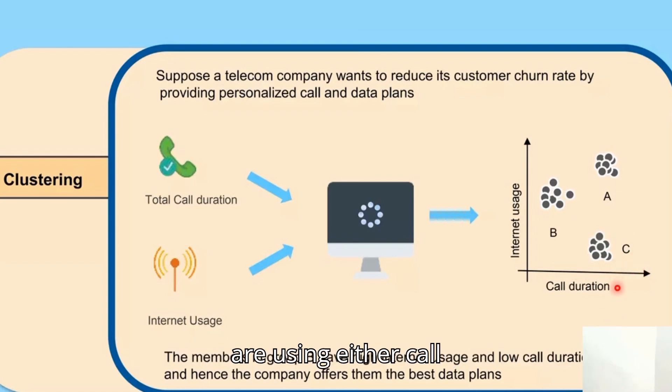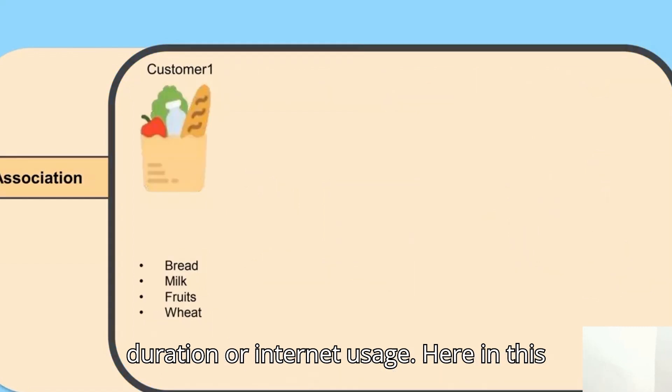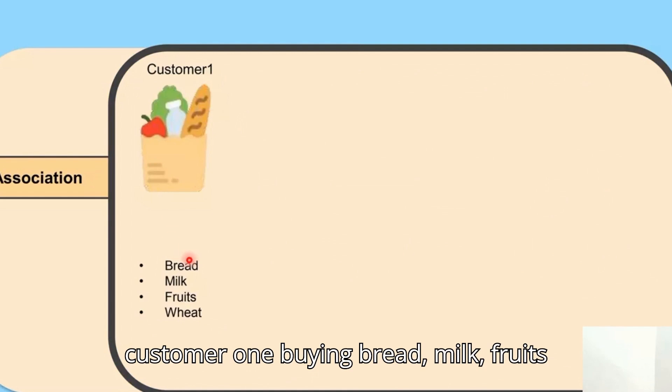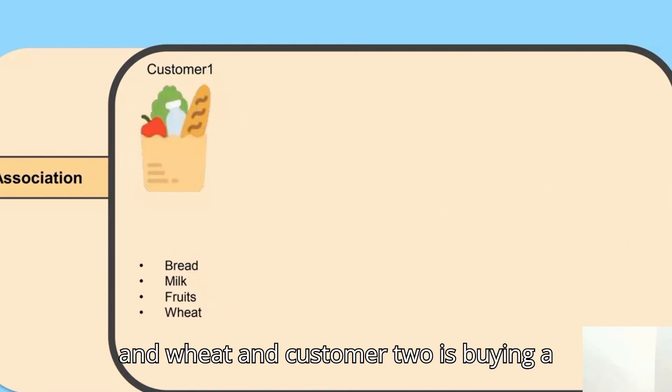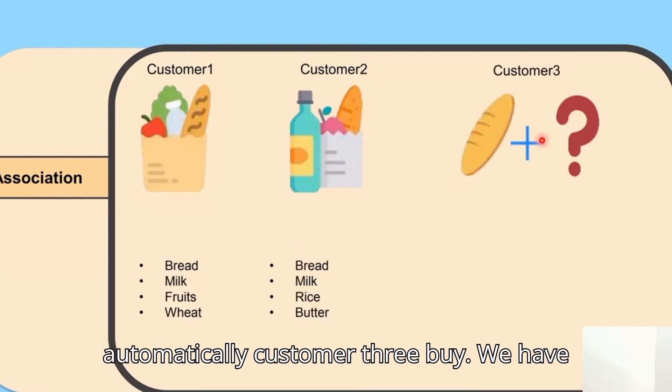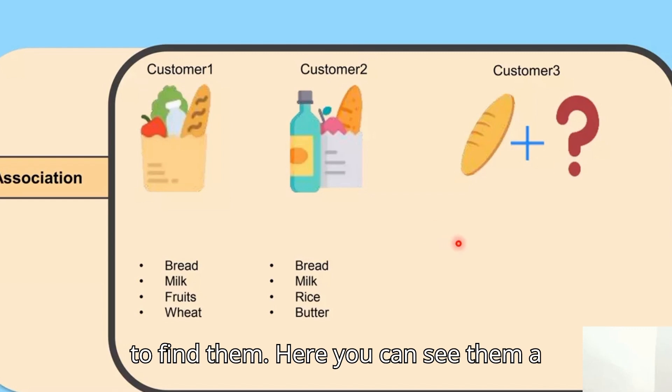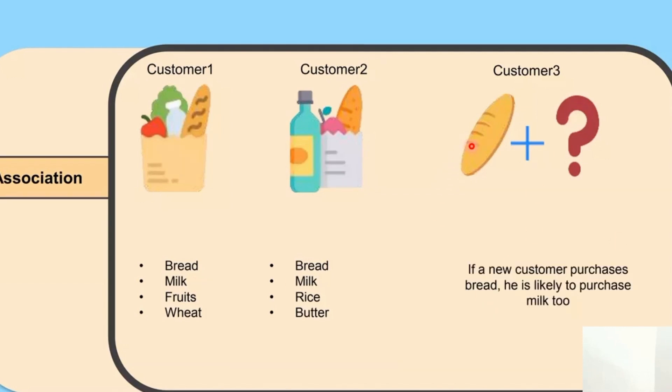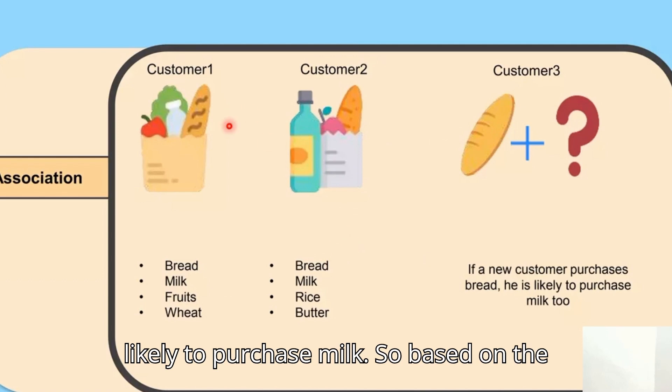In association rule, we can find customer one buying bread, milk, fruits, and wheat. Customer two is buying bread, milk, rice, and butter. What will customer three automatically buy? A person who is buying bread is automatically buying milk. New customer buying bread means they are likely to purchase milk.